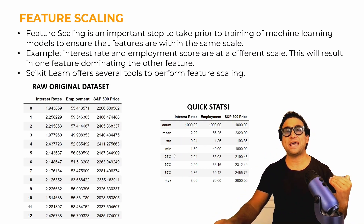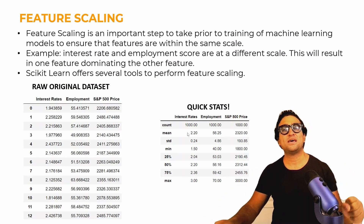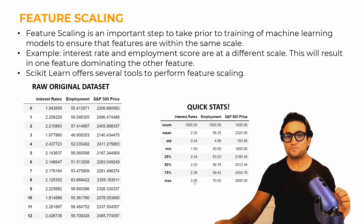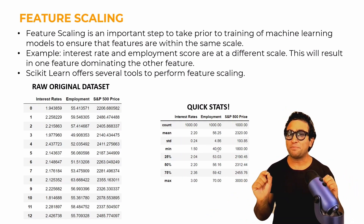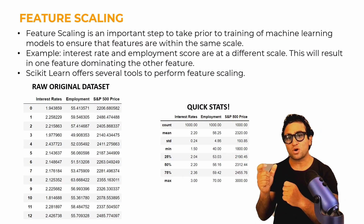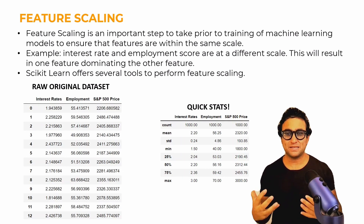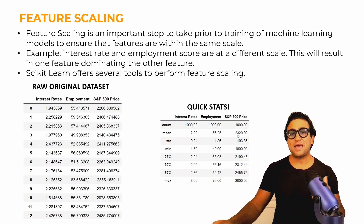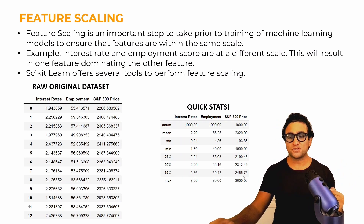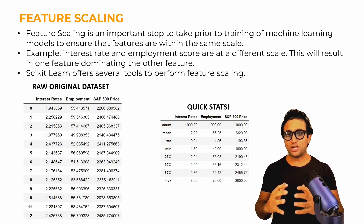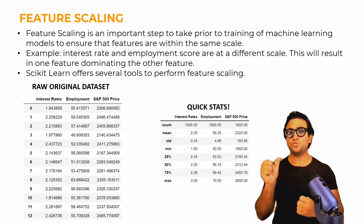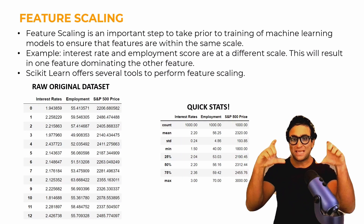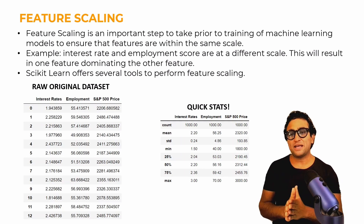If you look at the statistical summary, the minimum value of interest rates is 1.5 and the maximum is around 3. Employment score — which is not employment percentage but a score indicating how strong the stock market is — ranges from 40 to 70. And S&P 500 is between $1,800 and $3,000. So if I train a machine learning model with this data, I need to make sure all features are scaled to the same scale, so no single feature dominates another.